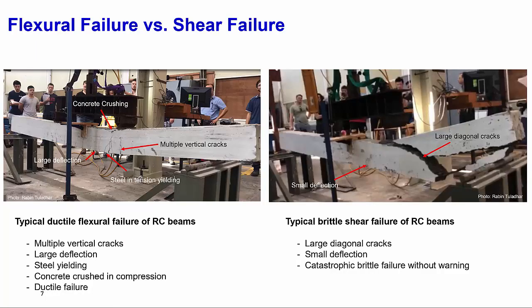Comparing flexural and shear failure modes: in a typical flexural failure we see multiple vertical cracks, large deflection before maximum bending moment is reached, steel yielding before concrete crushes, and overall ductile behavior. In shear failure, as seen in this video, there is a very abrupt and catastrophic failure characterized by large diagonal cracks with little visible vertical cracking. The deflection at maximum capacity is very small, making it a brittle failure that should be avoided in real structures.